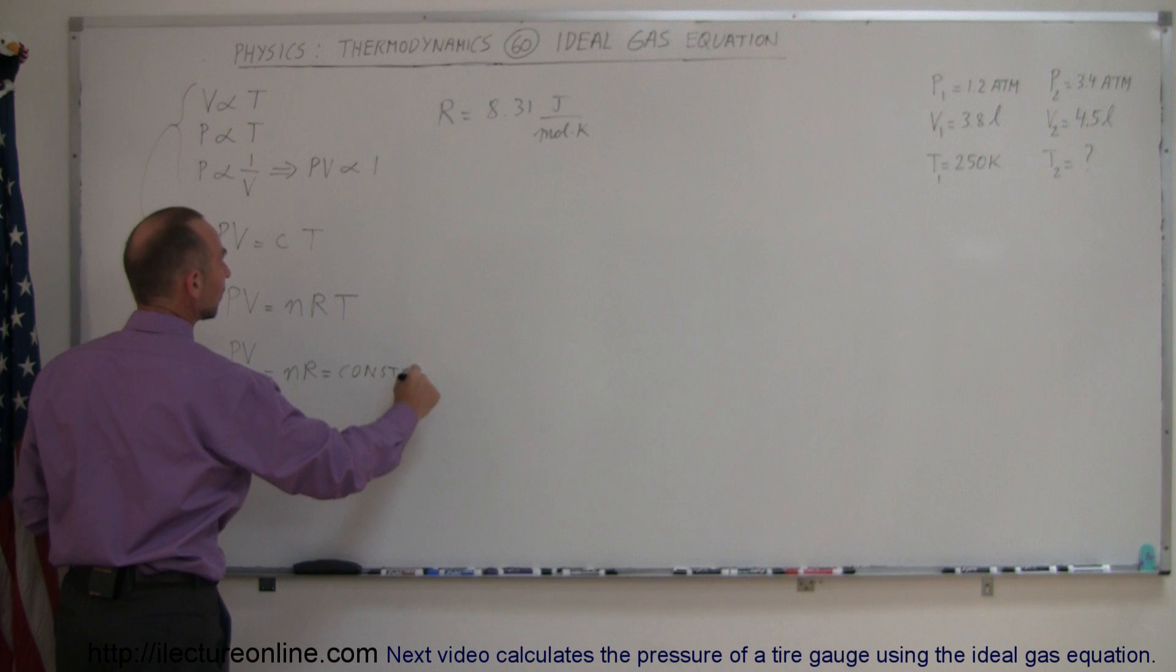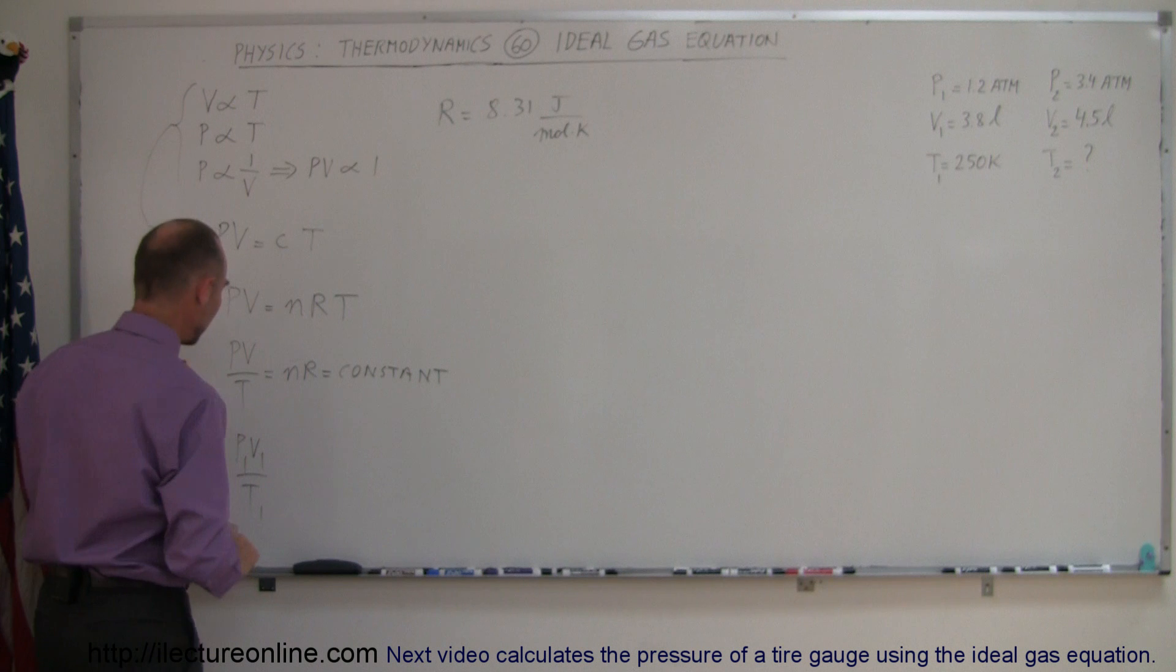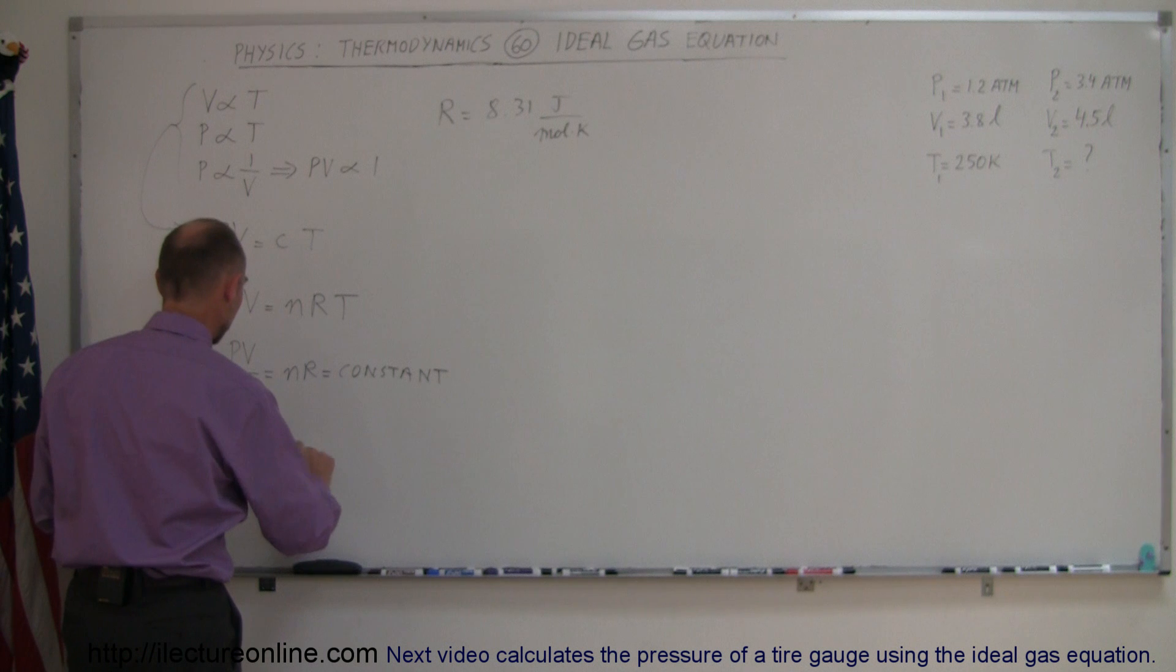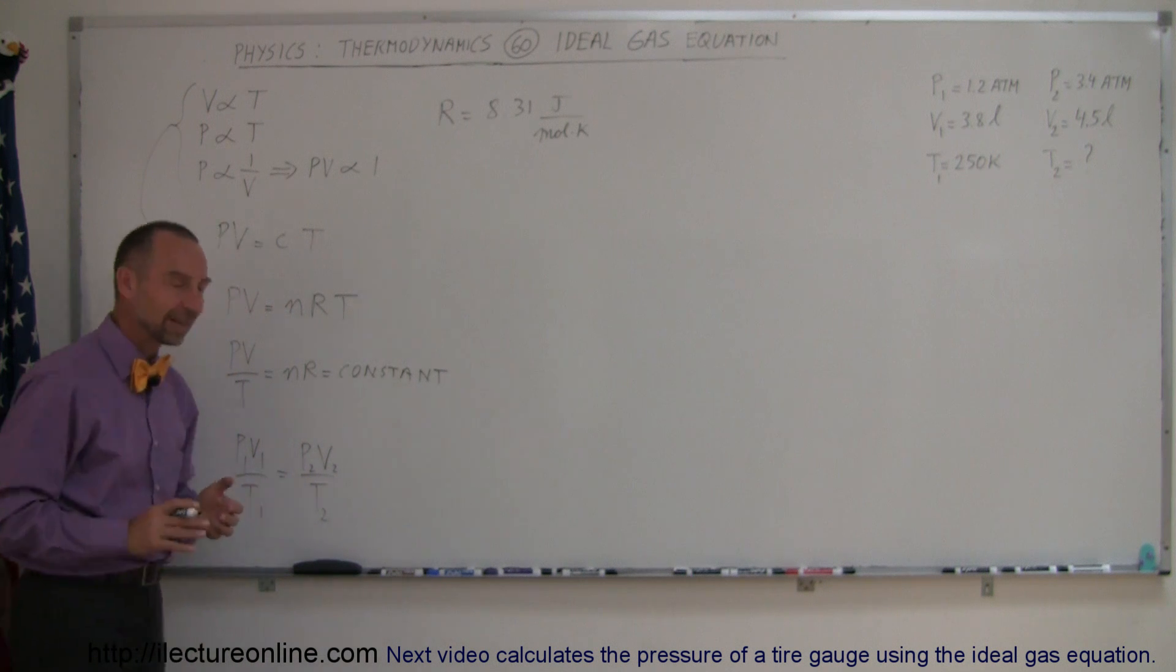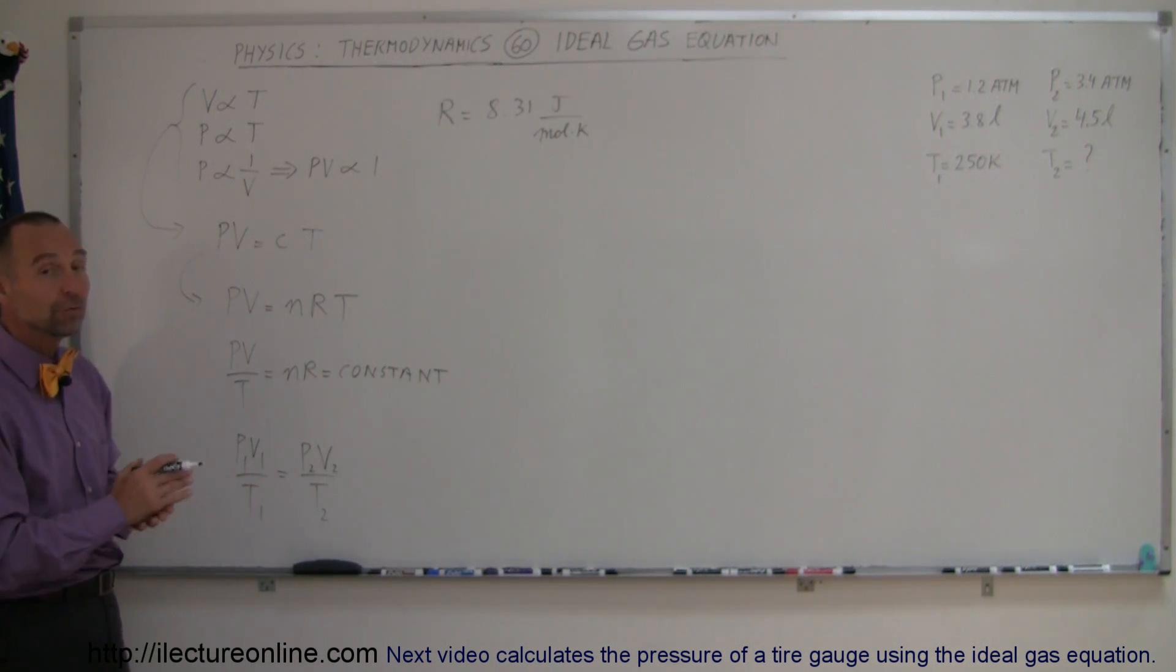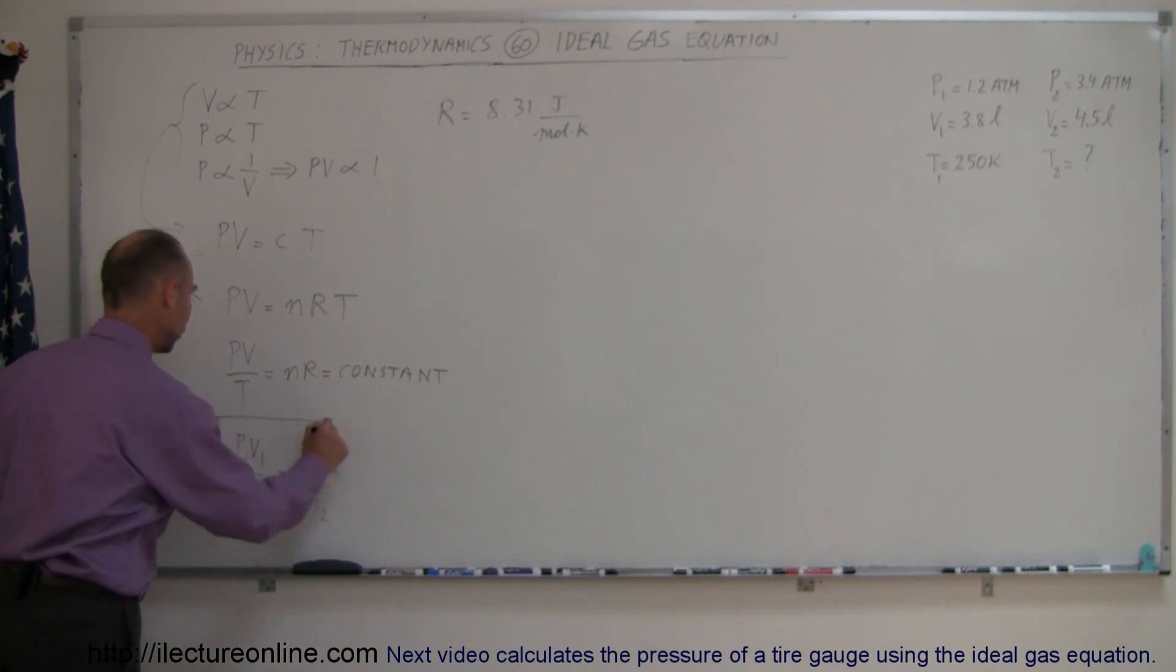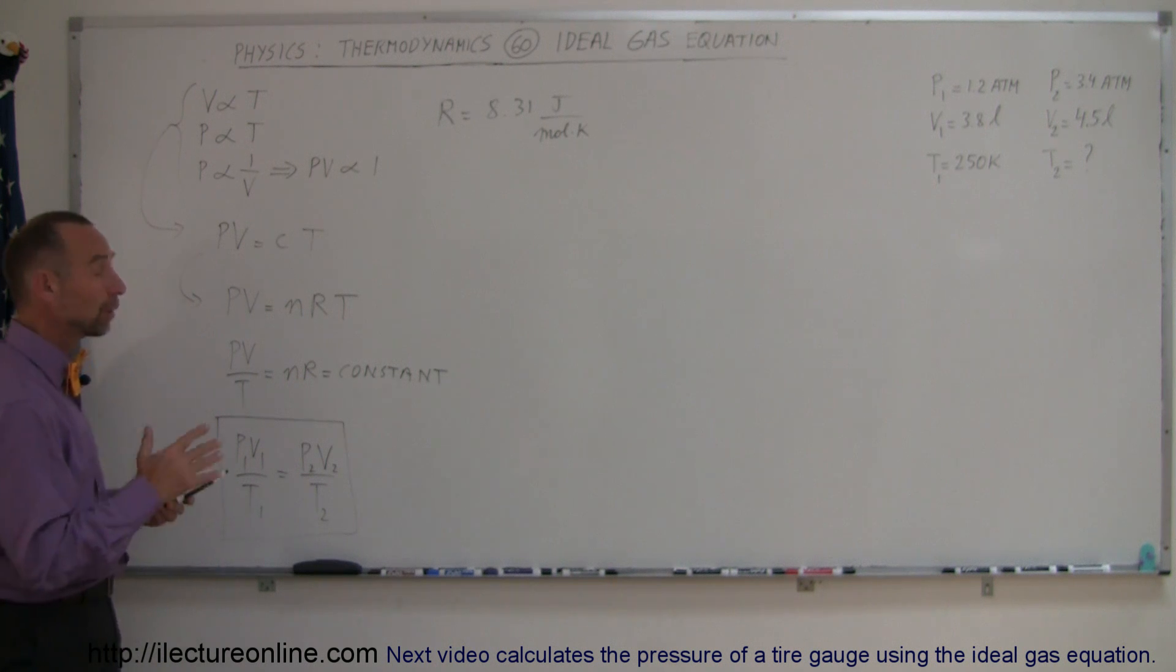Which means that P1V1 over T1, so the pressure, the volume, and temperature of a gas in some state, in the initial state, must equal the pressure, volume, and temperature in the final state. And so we can say that P1V1 over T1 equals P2V2 over T2. And this equation right here, in this format, will allow you to solve for any kind of situation where a gas changes from one state to another state.